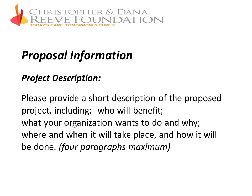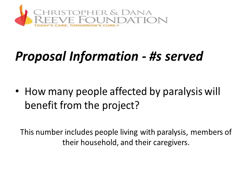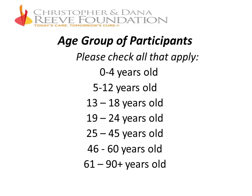The project description asks you to provide a short description of the proposed project, including who will benefit, what your organization wants to do and why, where and when it will take place, and how it will be done. For numbers served, indicate how many people affected by paralysis will benefit — including people living with paralysis, members of their household, and their caregivers. We also want to know the age groups of participants: 0–4, 5–12, 13–18, 19–24, 25–45, 46–60, and 61–90+ years old.